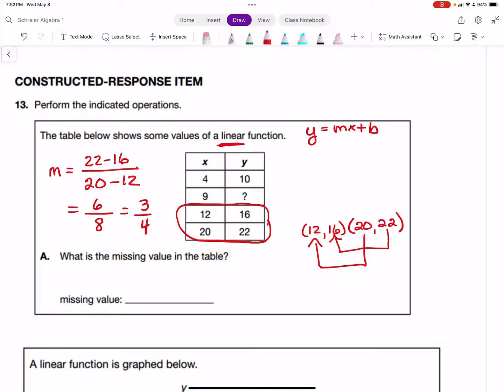Now replace this question mark with the variable y, and write your slope formula again and set it equal to 3/4. Our points now are (4, 10) and (9, y). So we're going to say (y - 10)/(9 - 4) = 3/4. So (y - 10)/5 = 3/4.